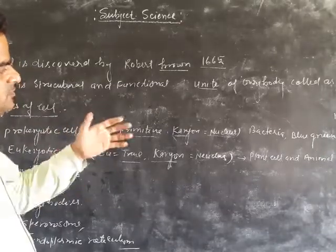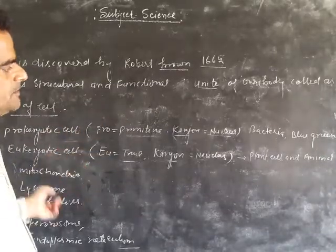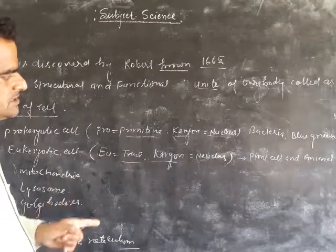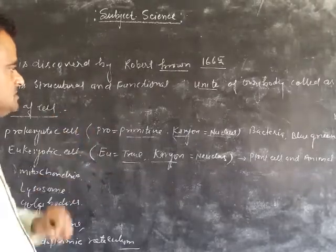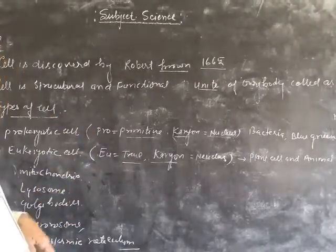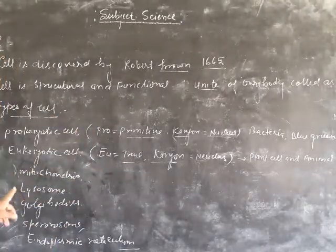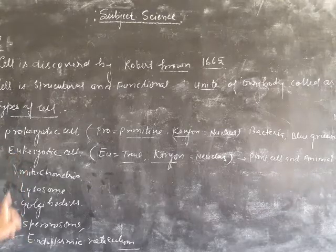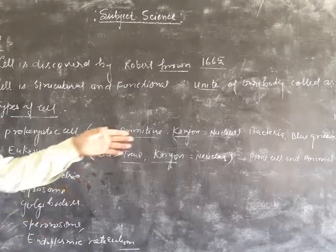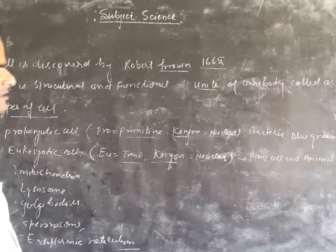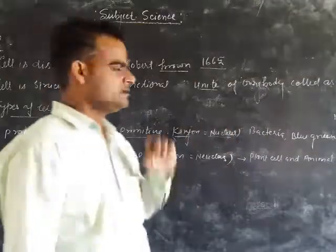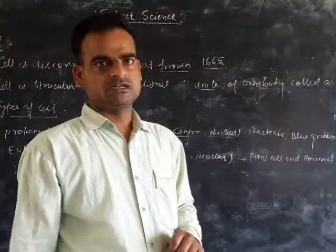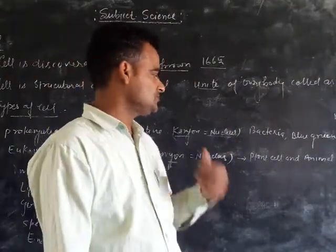We can represent bone cells. Eukaryotic cells are the plant cells, animal cells. And we can represent both the mitochondria and we can represent this. Eukaryotic cells include plant cells and animal cells. Thanks. Watch me for you. Please continue now.